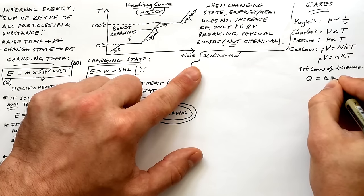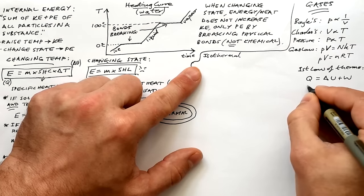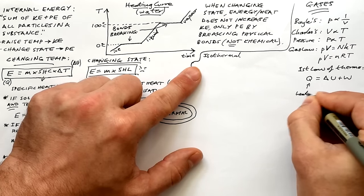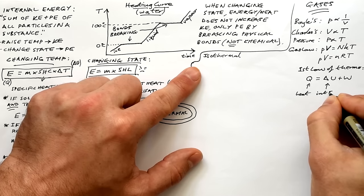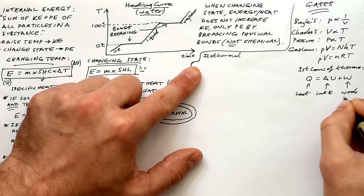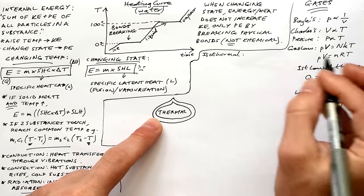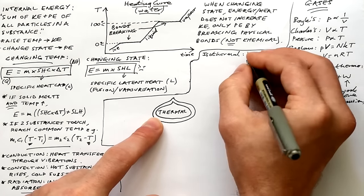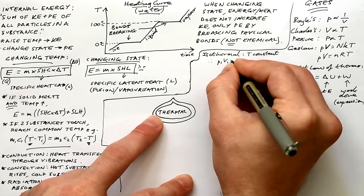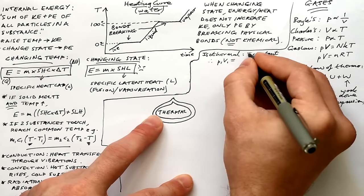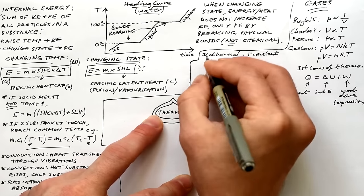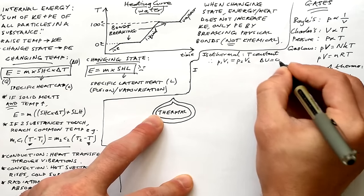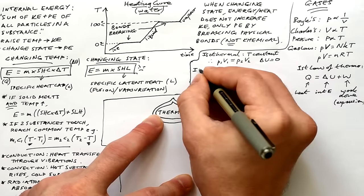The first law of thermodynamics: Q equals delta U plus W, Q being heat that goes into a system, delta U being the change in internal energy — that's ultimately temperature — and W is work done; a gas has to expand in order to do work. There are four main types of processes a gas can undergo. Isothermal — temperature is constant, so NkT and NRT are constant, meaning PV is constant: P₁V₁ equals P₂V₂. If temperature stays the same then delta U equals zero.